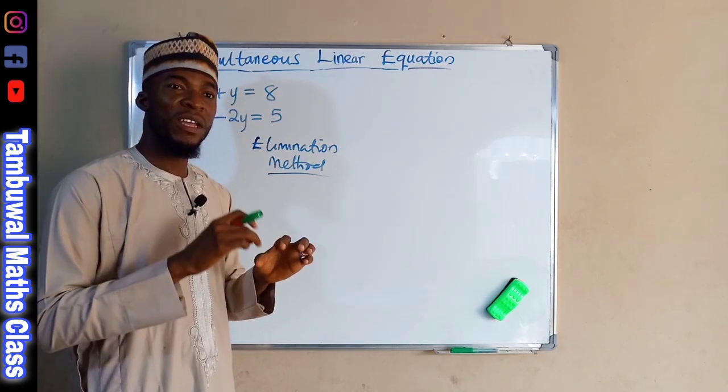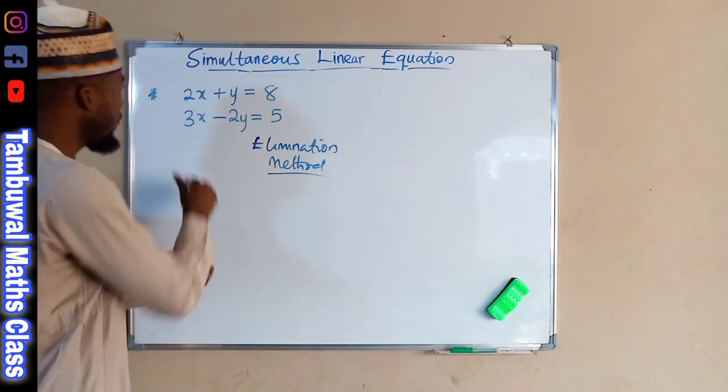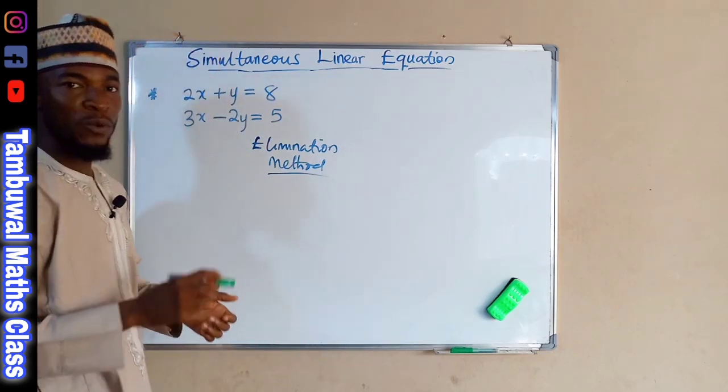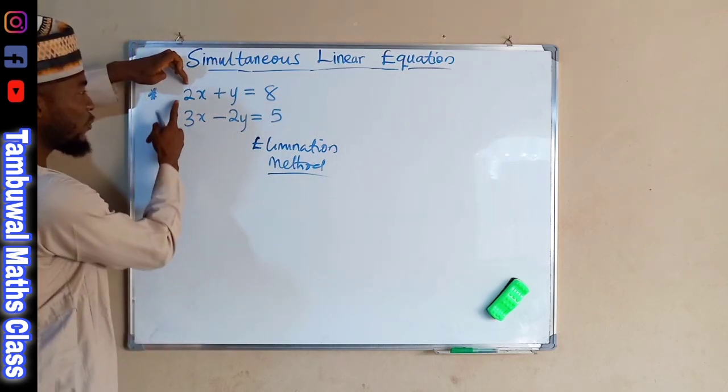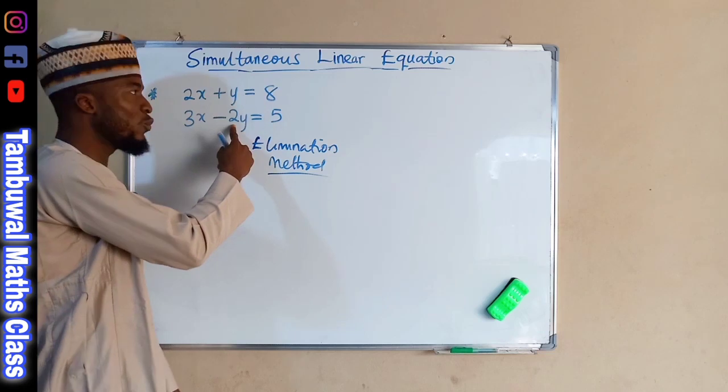And to do that, we have to ensure that those unknown variables have the same coefficient. But if you can see, all of them have different coefficients. X has 2 here and 3 here. Y is positive 1 and here is negative 2.